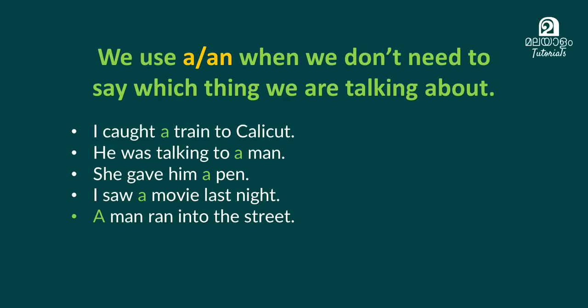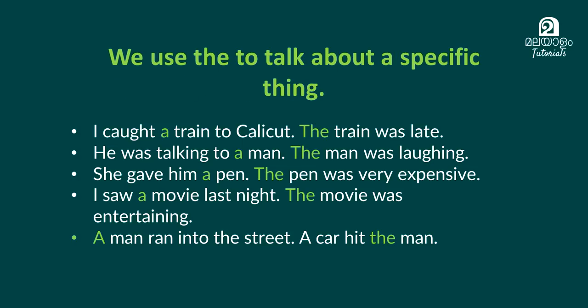A man ran into the street. We use 'the' to talk about a specific thing — the specific thing we already mentioned. I caught a train to Calicut. The train was late. He was talking to a man. The man was laughing.